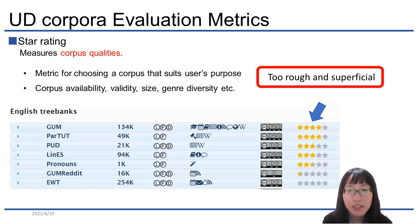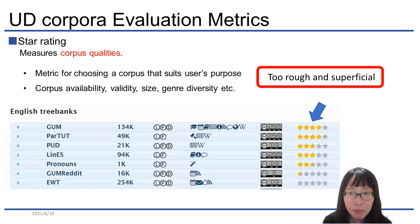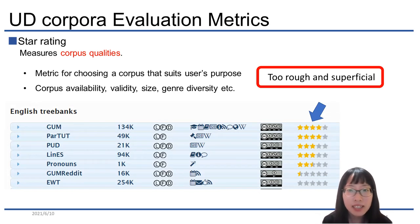First, we introduce two metrics of goodness of corpus. The star rating is a metric of the quality of corpus themselves for choosing a corpus that suits users' purpose. It is determined by corpus availability, validity, size, and so on. But this measure is too rough and superficial.